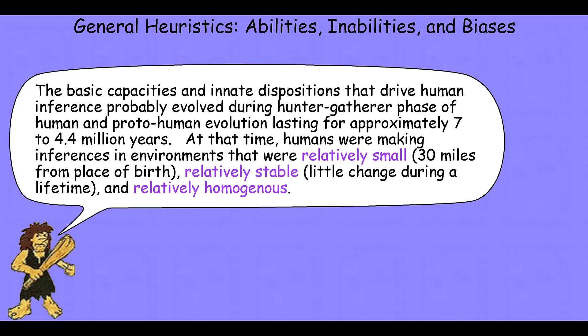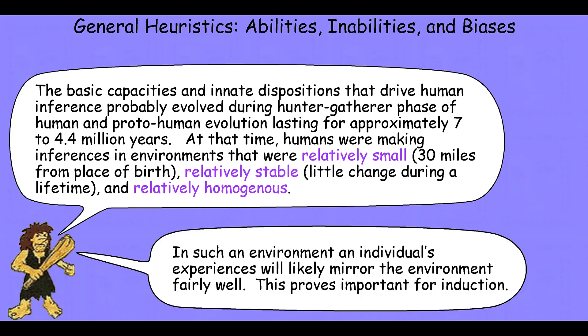If we look around at the world, we realize that most of those environments are going to be relatively homogenous — not a lot of dramatic variation in the environment that the average human or proto-human was solving problems in during this very long period of evolution. In such an environment, an individual's experiences are going to likely mirror their environment fairly well, which turns out to be really good from the perspective of inductive inferences.